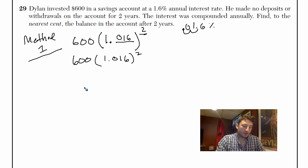We'll do 1.016 times 600. I'm sorry. 1.016 times 1.016 times 600.